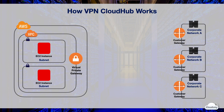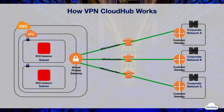Suppose you have branch offices in multiple locations which don't have direct connections with each other. Each office uses a customer gateway to connect to a common virtual private gateway on AWS using dynamically routed VPN connections. Each customer gateway on the remote site has a public IP address and a unique autonomous system number, or ASN, for BGP routing.